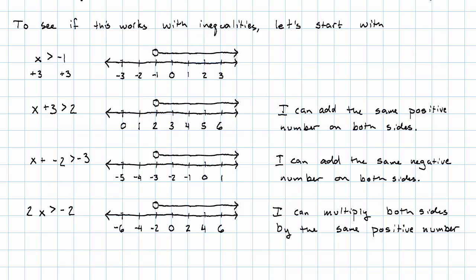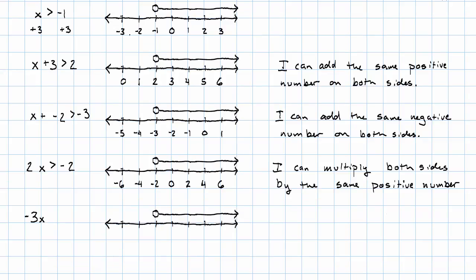But, look what happens if I multiply by a negative number. I multiply each of these labels by negative 3. Negative 3 times negative 3 is positive 9. Negative 2 times negative 3 is positive 6. Negative 1 times negative 3 is positive 3. 0 times negative 3 is 0. 1 times negative 3 is negative 3. 2 times negative 3 is negative 6. 3 times negative 3 is negative 9.